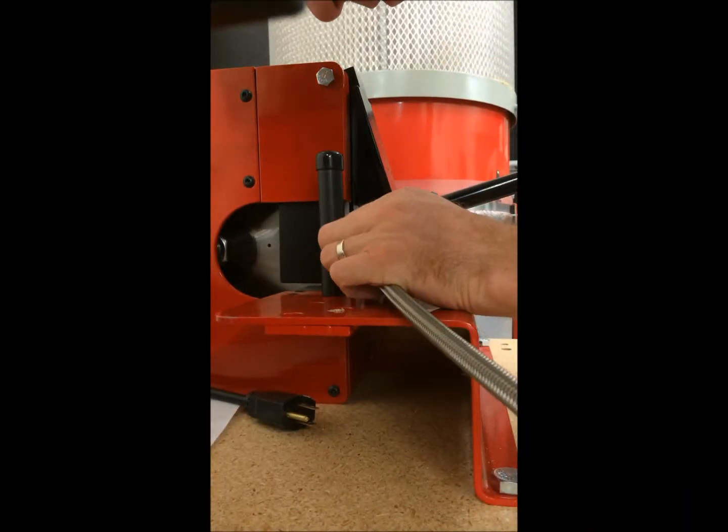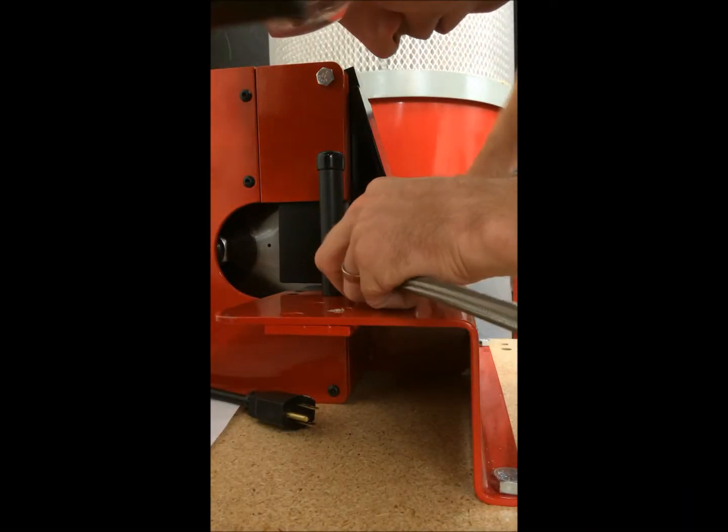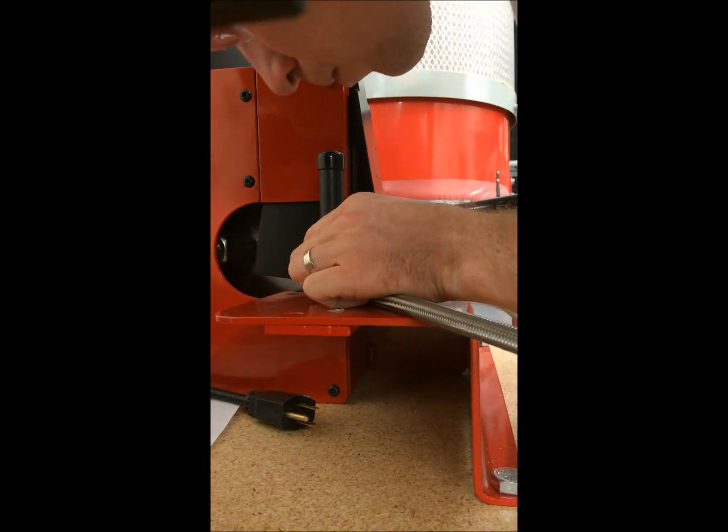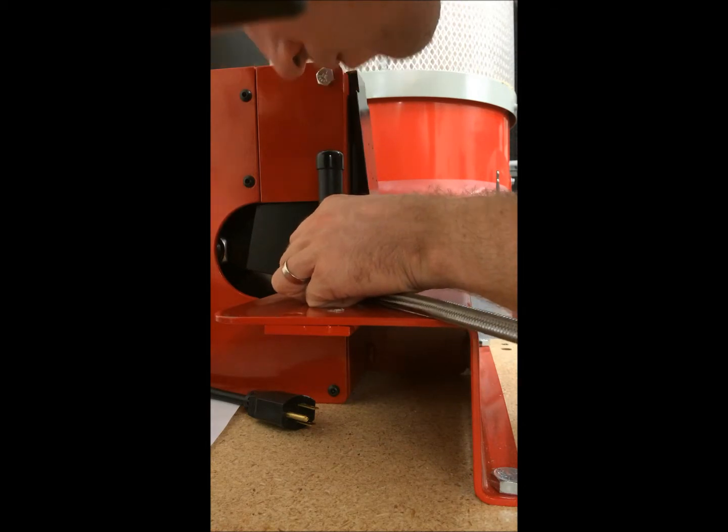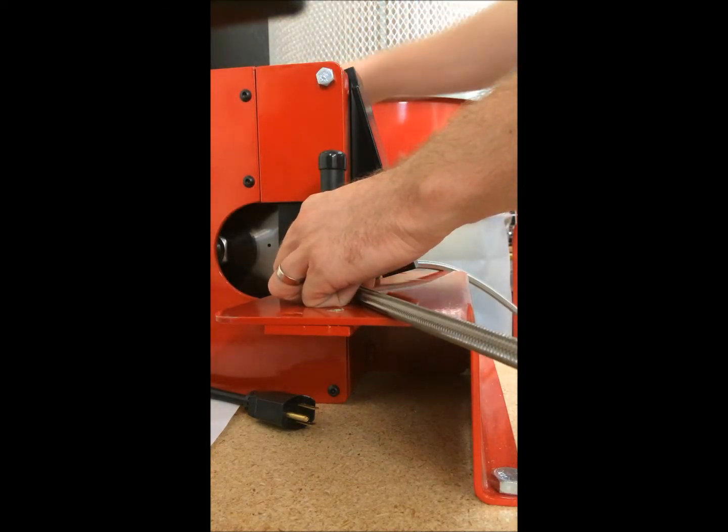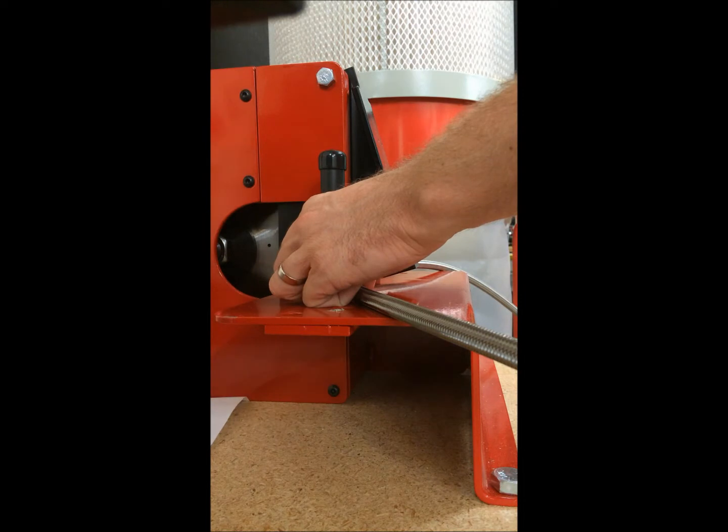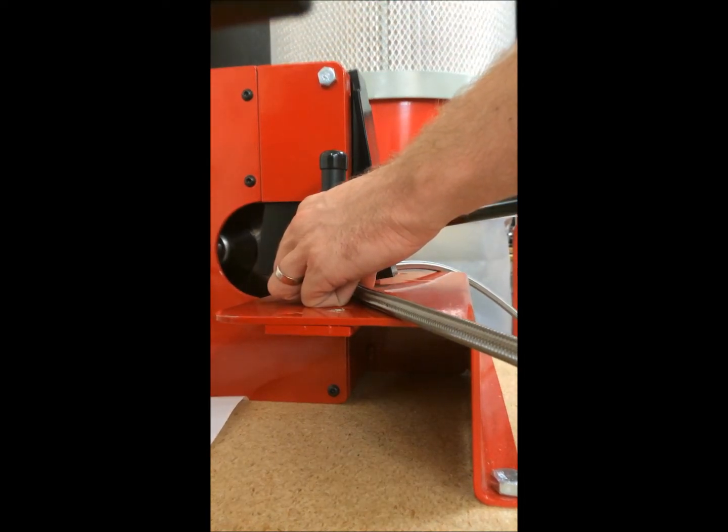So the first step in the hose fabrication process is cutting the hose. Once we've marked the hose to the final length to your specifications, it's time to make the cut. Now this may seem like a fairly easy task, but we have a very specialized saw with a special blade that's extremely sharp and is able to cut through the stainless steel braid hose.